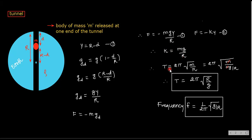Time period T equals 2π √(m/k). Substituting k = mg/R gives T = 2π √(m/(mg/R)) = 2π √(R/g), since m cancels and R comes up. Hence, the time period of oscillation is T = 2π √(R/g). If you want frequency, just take the reciprocal: f = (1/2π) √(g/R). Please note this down.